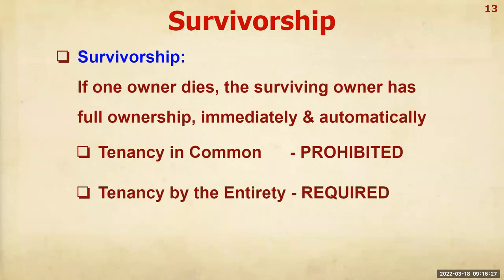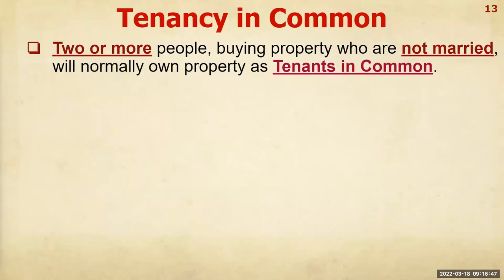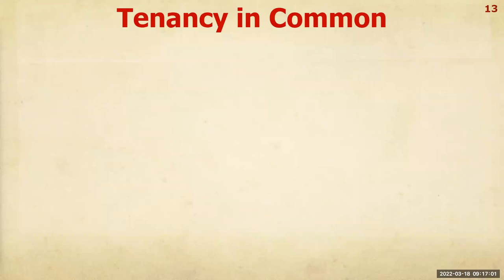Tenancy by the entireties must have survivorship — the law demands it. Joint tenancy depends. Brokers must never advise buyers on how to take title — that's practicing law without a law license. Brokers should always advise buyers to consult an attorney regarding title.